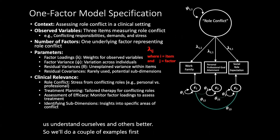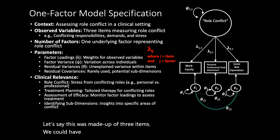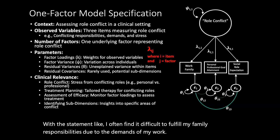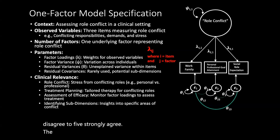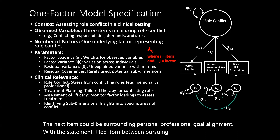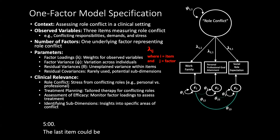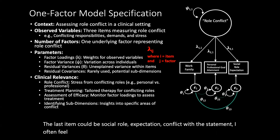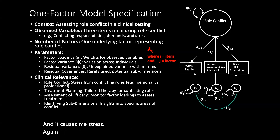We'll do a couple of examples. First, a basic one-factor model that could be highly relevant in clinical work, especially in understanding role conflict. Let's say this was made up of three items. We could have work-family conflict with a statement like, 'I often find it difficult to fulfill my family responsibilities due to the demands of my work.' The level of measurement would be a Likert scale from one (strongly disagree) to five (strongly agree). The next item could be surrounding personal-professional goal alignment: 'I feel torn between pursuing my personal passions and my professional obligations,' again on that Likert scale from one to five.